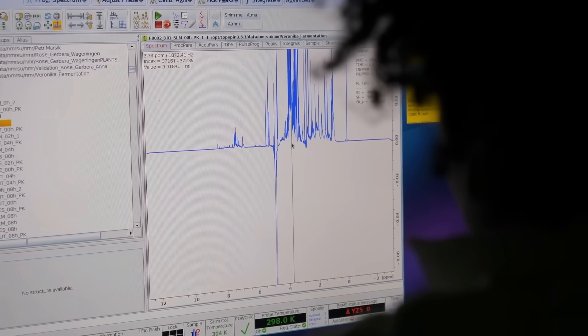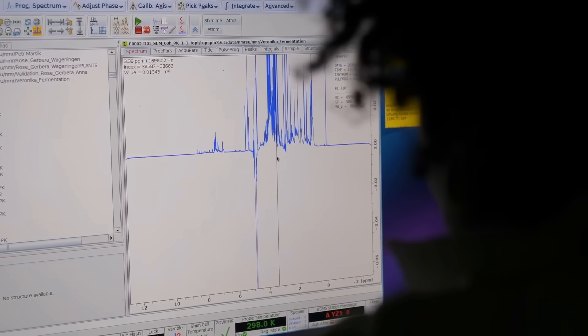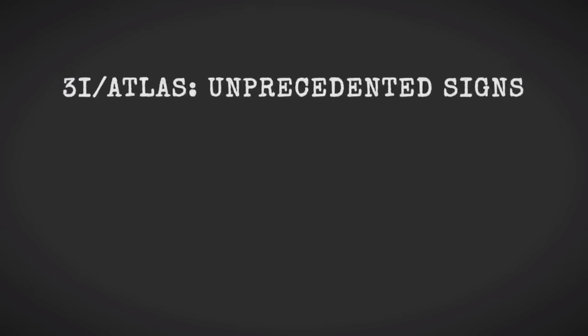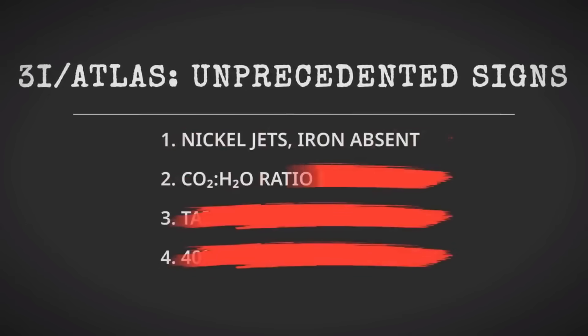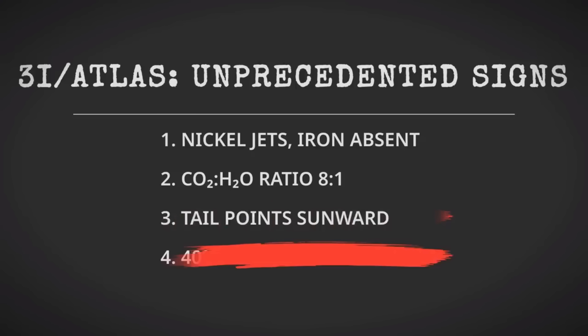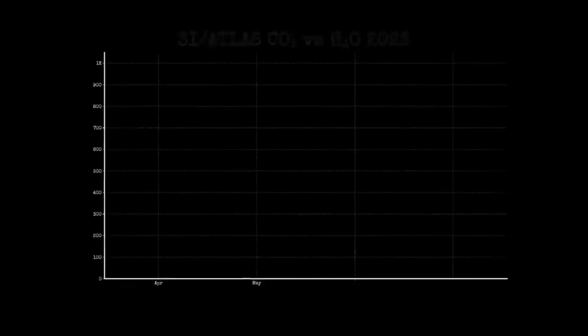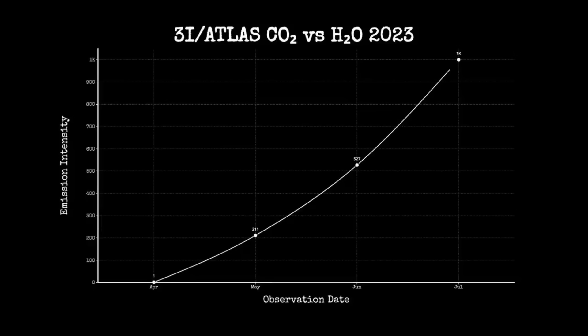VLT confirmed the presence of cyanide, a molecule seen in some comets, but also detected nickel, a metallic element almost never observed in these icy wanderers. Nickel's presence is a clue to the comet's origins. It suggests material forged in the heart of a long dead star or accumulated in environments rich in heavy elements.